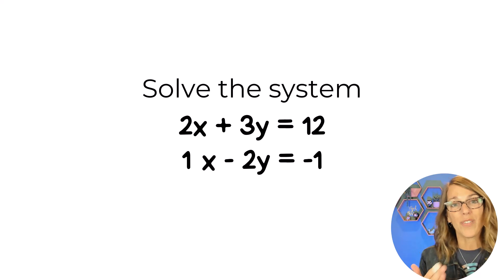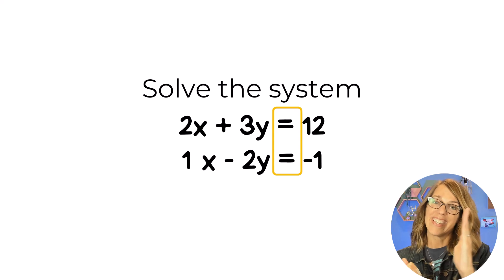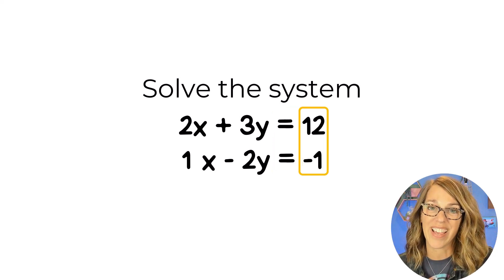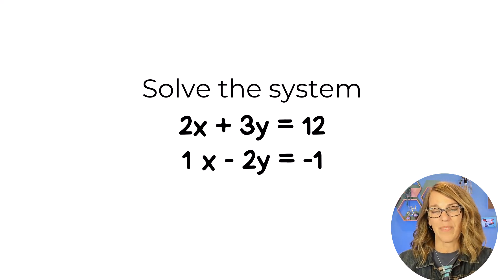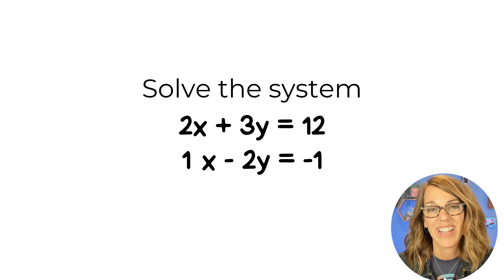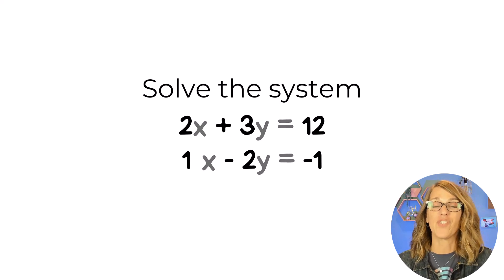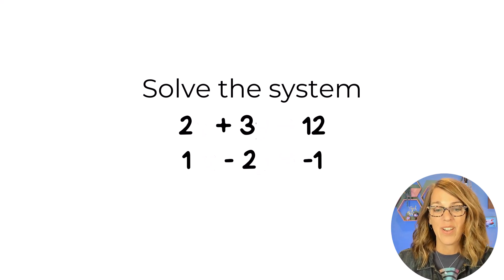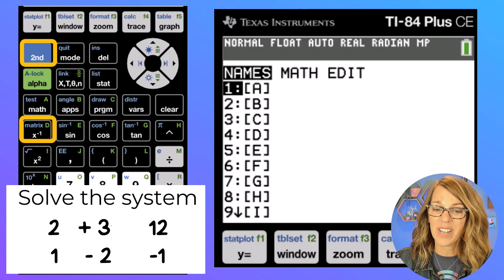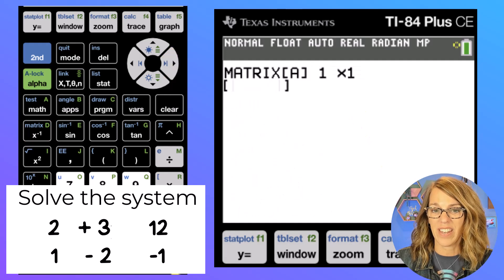We're going to solve this system of two linear equations. Now you'll notice that I already have it set up. So I've got the x's first, the y's second, the equal sign next, and the numbers on the other side. So you want to make sure that you've got it set up that way, and then you're ready to put it into a matrix. In order to put it into the matrix, I am just going to use the numbers, just the coefficients. We're going to go into that matrix menu. So second, followed by matrix, and we want to edit a matrix. So arrowing over to edit, and then enter.